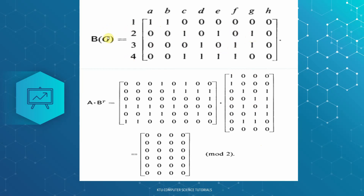B transpose is B transpose — we will change the rows and the columns. The column is 1, the second row is 1, the third row is 0, 1, the fourth is 0, 0, 1, and the fifth is 0, 1, 0, 1. We will transfer the matrix and compute the products.